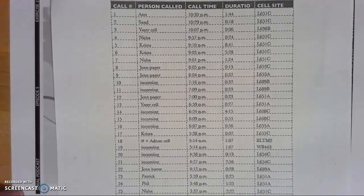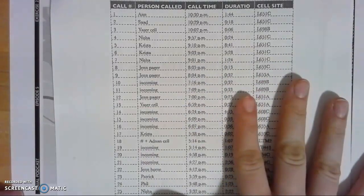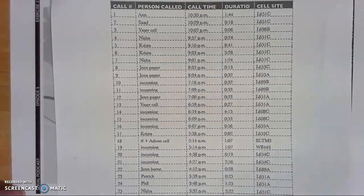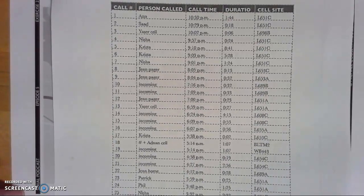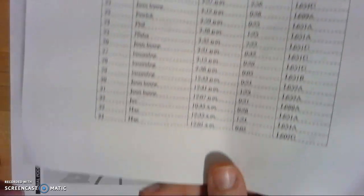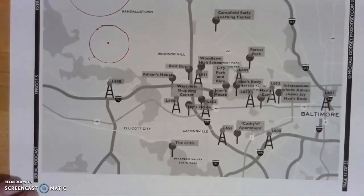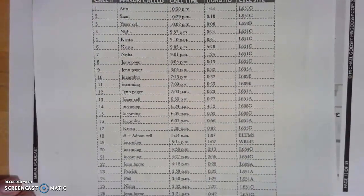We're going to use two pieces of paper. These are digitally available to you on its learning. I've printed them out to make my life easier, but since I've printed them, you don't have to. It's the call log from January 13th, 1999 — important for us — and then this is a map of their town.